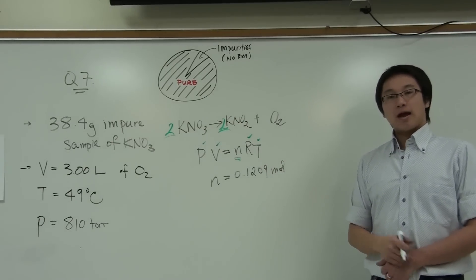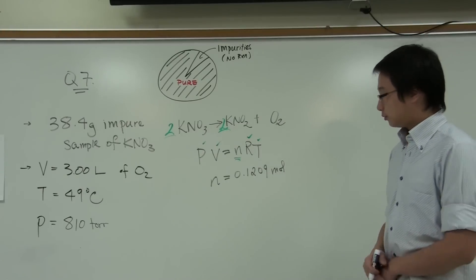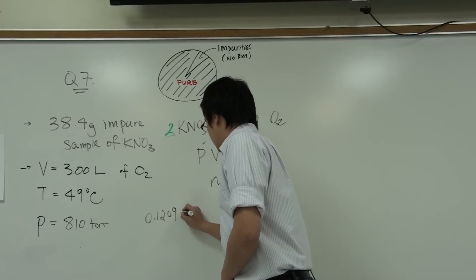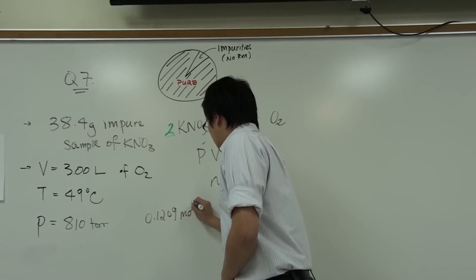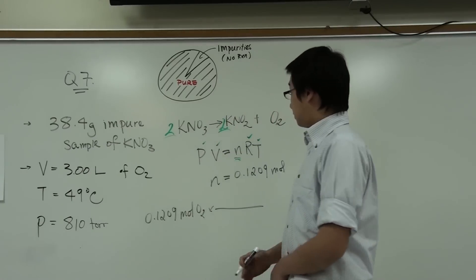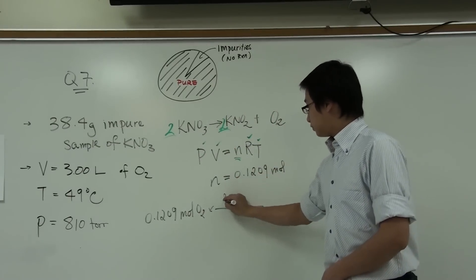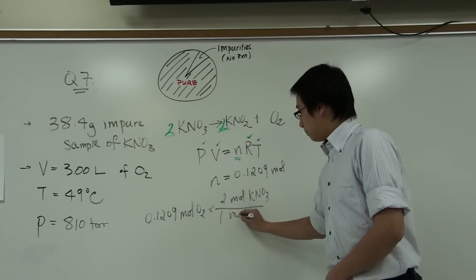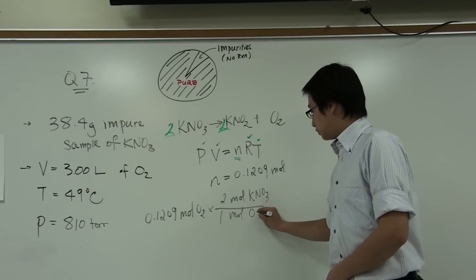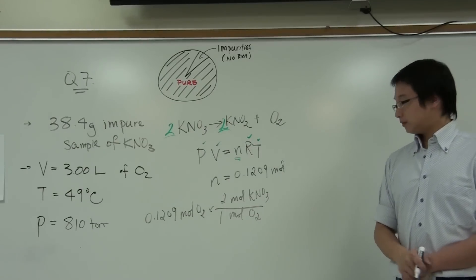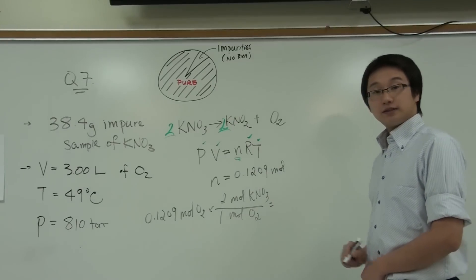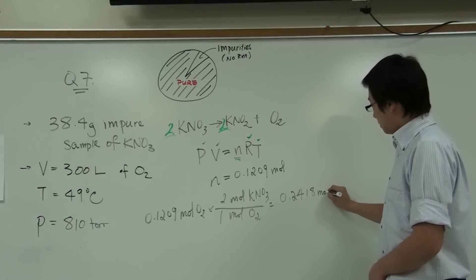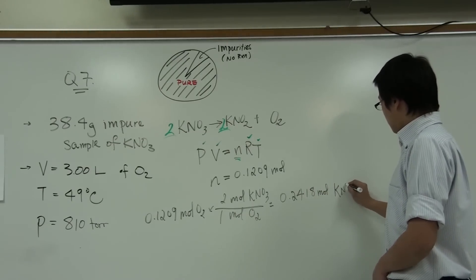Okay? And now we can use stoichiometry, apply mole ratio. So we have 0.1209 moles of O2. And then we simply apply the mole ratio. We have two moles of KNO3 and one mole of O2. So you will get 0.2418 moles of KNO3.